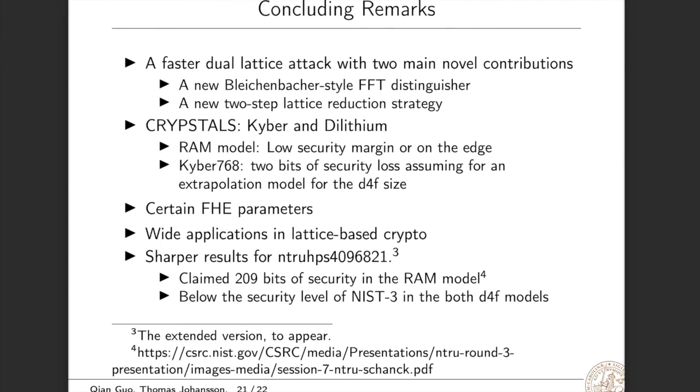We now conclude the work. We have proposed a faster dual lattice attack with two main novel contributions. Firstly, we proposed a new reduction-via-style FFT distinguisher that can reduce the volume of the used dual lattice. Secondly, we proposed a new two-step lattice reduction strategy allowing us to exploit both the dimension-for-free gain and the gain of one sieving producing many short vectors. We applied this new attack to Crystals and obtained significant gains in the RAM model. For instance, these parameter sets either offer a very low security margin or they are really on the edge. Assuming the BDGL D4F model, we see that Kyber 768 has two bits of security loss.